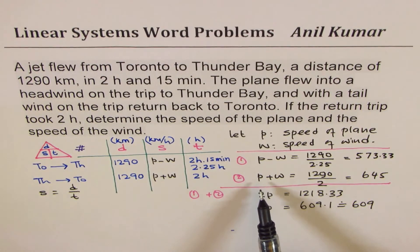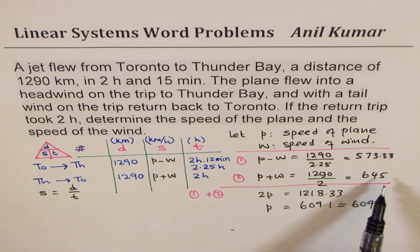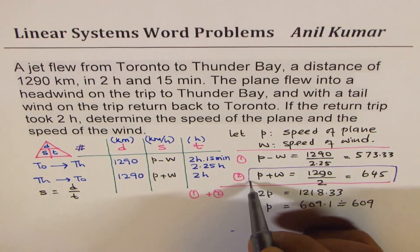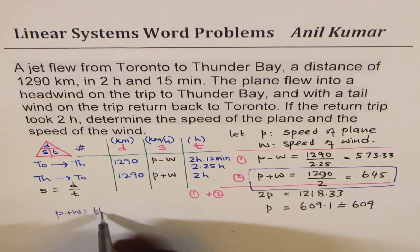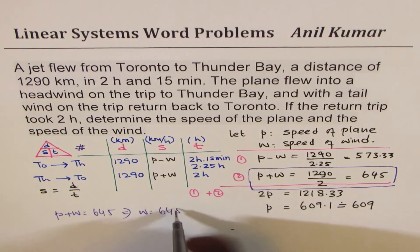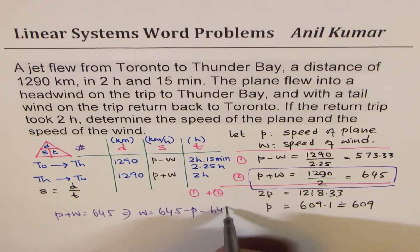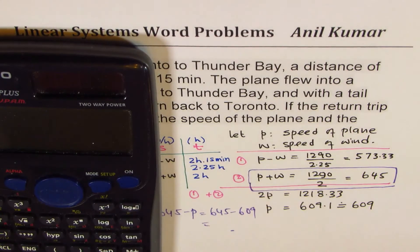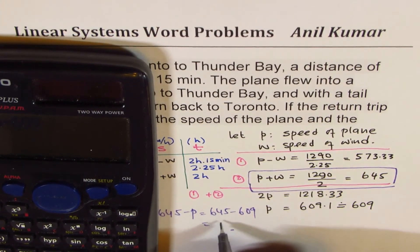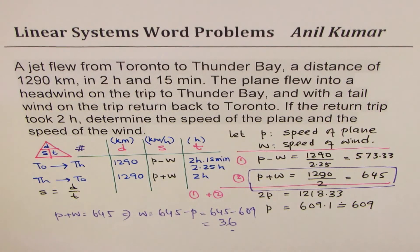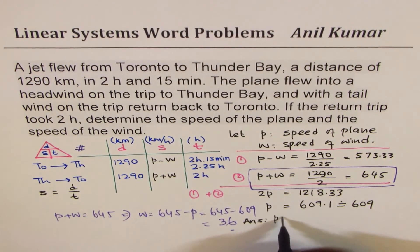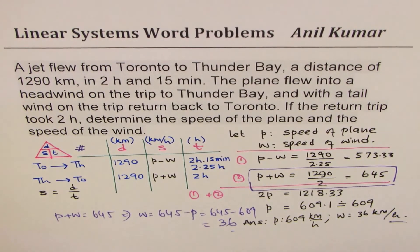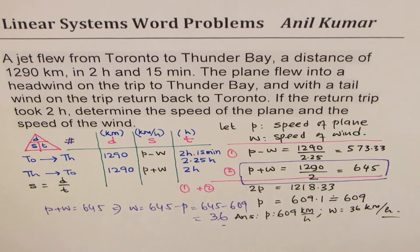To find the wind speed, we use Equation 2: p plus w equals 645. Substituting p equals 609, we get wind speed w equals 645 minus 609, which equals 36. So the final answers are: speed of the plane is 609 kilometers per hour and speed of the wind is 36 kilometers per hour. Including units is very important in all these questions.